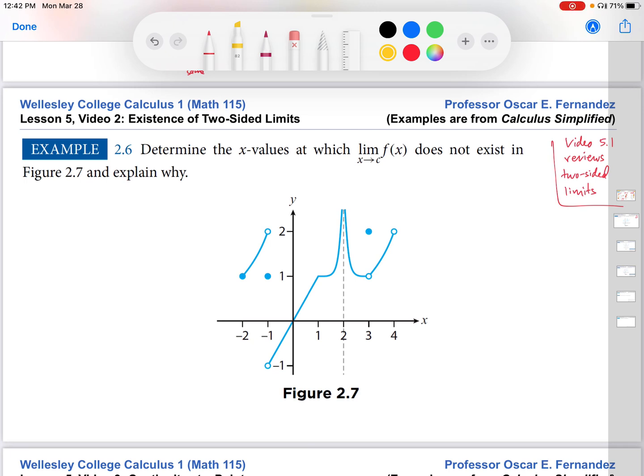Hi, this is Professor Fernandez. This is the second video in Lesson 5. We're still talking here about existence of two-sided limits and evaluation of two-sided limits in general. And we're going to do an example 2.6 here from Calculus Simplified. So this example says, determine the x-values at which this limit does not exist, and explain why. And then we're to use this figure.